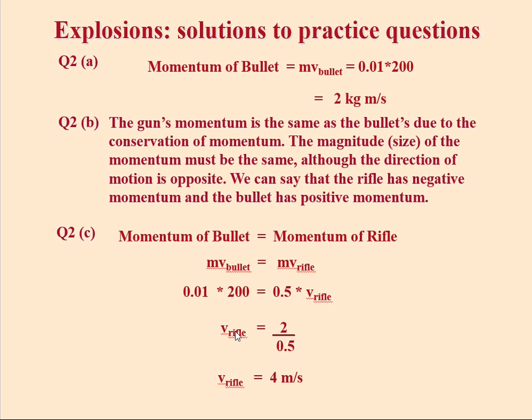Rearranging for the unknown, which is the velocity of the rifle: 200 times 0.01 gives you 2, then divide 2 by 0.5 and you get 4 meters per second.